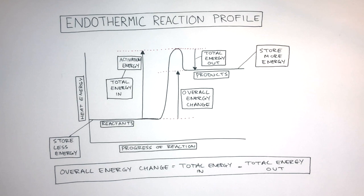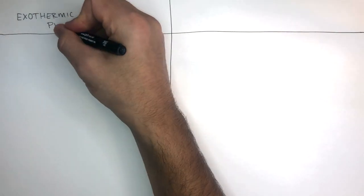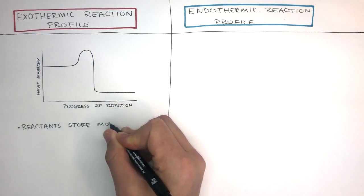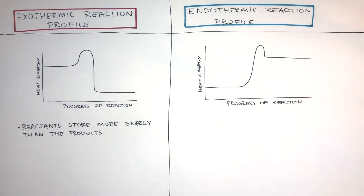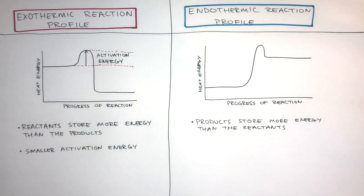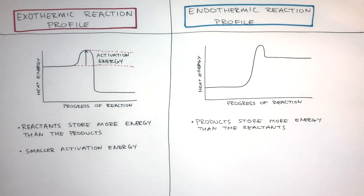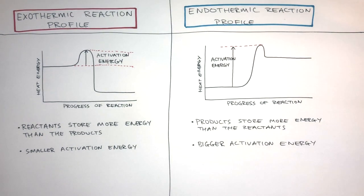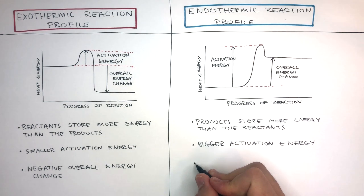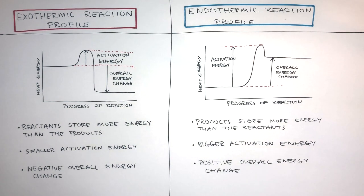We're now going to summarize the differences and similarities between exothermic and endothermic reaction profiles. Exothermic reaction profiles show how the reactants store more energy than the products, whereas endothermic reaction profiles show how the products store more energy than the reactants. There is a smaller activation energy in an exothermic reaction and a bigger activation energy in an endothermic reaction. There's a negative overall energy change in exothermic reactions, and a positive overall energy change in endothermic reactions.